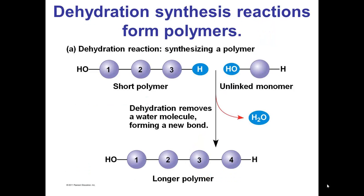So how do we make polymers in a biological sense? This is accomplished through a reaction called a dehydration synthesis reaction, also sometimes referred to as a condensation reaction. In a dehydration synthesis reaction, we have our short polymer with a free hydrogen at the end. We also have a new monomer to add that has a hydroxyl group. To perform the reaction, a unit of water is removed — both a hydrogen and a hydroxyl group — to form water. This allows the formation of the bond between the short polymer and the new monomer, extending the polymer. Importantly, dehydration synthesis reactions require energy.